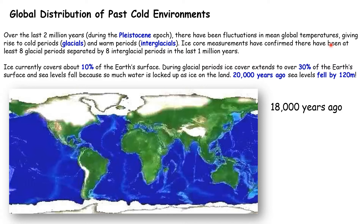Currently ice covers about 10% of the Earth's surface, and during glacial periods ice has extended to over 30% of the Earth's surface. During this time sea levels fall because so much water is locked up as ice on the land. For example, 20,000 years ago sea levels fell by 120 meters.